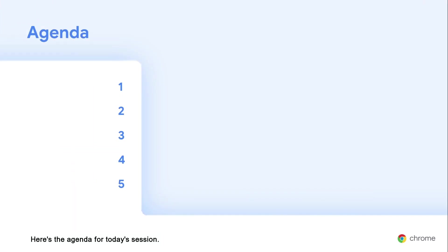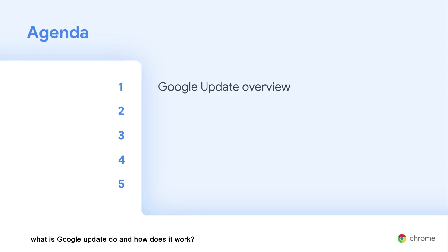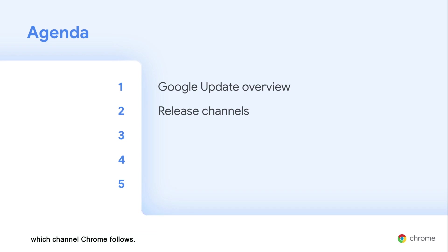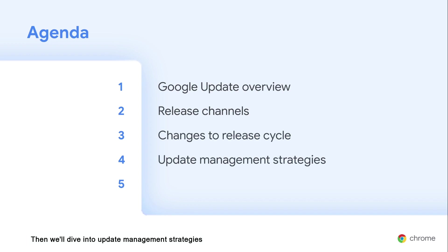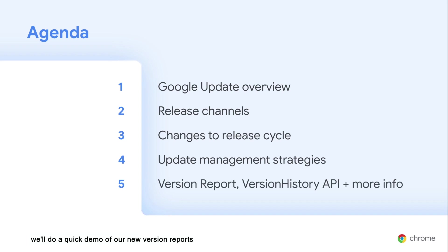Today, I'll be taking you through some techniques for managing updates in Chrome, plus an in-depth look at some of Chrome Browser's newest update management features. Here's the agenda for today's session. First, I'll go through some basics — what does Google Update do, and how does it work? Then, I'll give you an overview of our release channels and a new policy that lets you change which channel Chrome follows. After that, we'll take a look at the upcoming changes to Chrome's release cycle. Then, we'll dive into update management strategies for your organization, a couple of new features, a quick demo of our new version report, and we'll talk about our new version history API before I leave you with some additional resources.